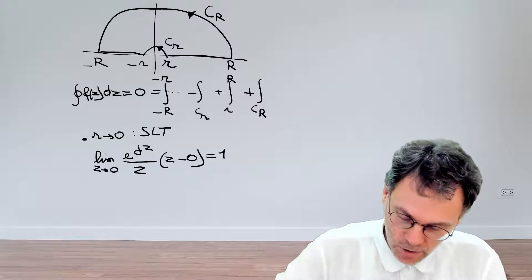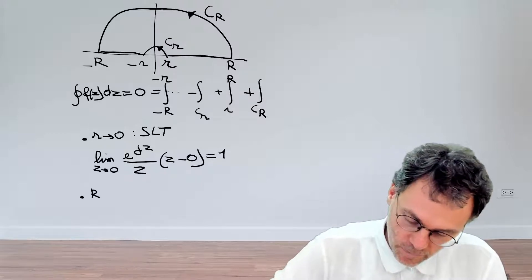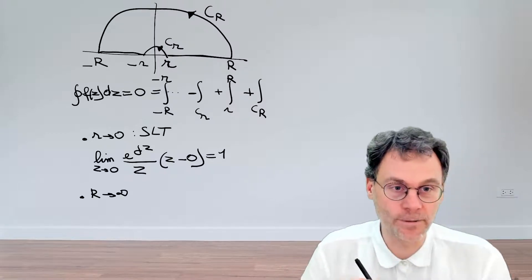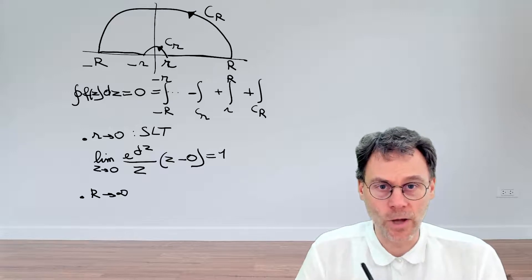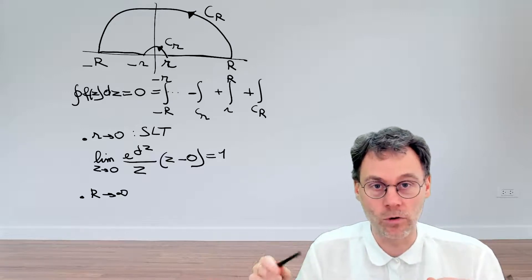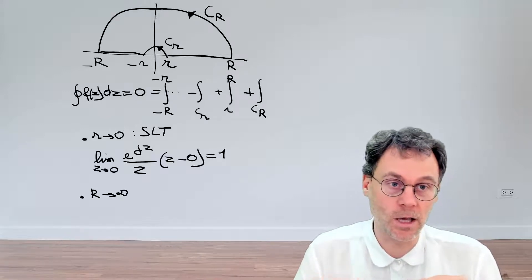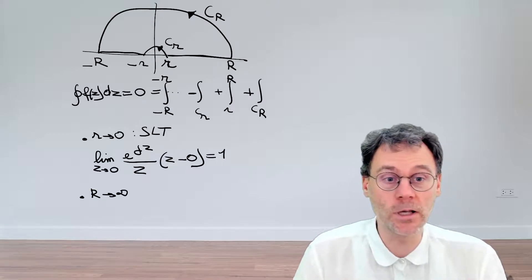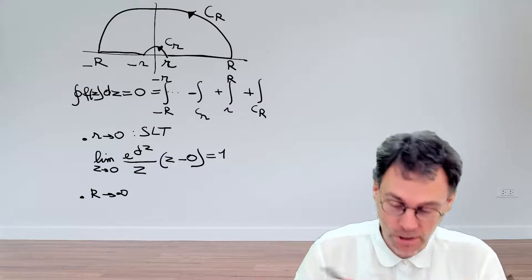So this is the contribution that we need to take into account the limit here to evaluate that a little bit later. But before we do that, let's look at the limits of big R going towards infinity. So we have two options, the big limit theorem or Jordan's lemma. In this case, since we have this exponential here in the integrand, it's Jordan's lemma that we need to look at.